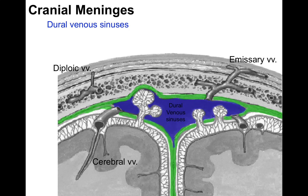The dural venous sinus acts as a receptacle for diploic veins, emissary veins, and cerebral veins. Diploic veins travel in the spongy (diploë) layer of skull bone — like the middle of an ice cream sandwich. Emissary veins travel from a dural venous sinus through the skull to the scalp; like a political emissary, they cross from one side to the other, and can spread infection into the brain. Cerebral veins drain the brain parenchyma capillaries and empty into a dural venous sinus.